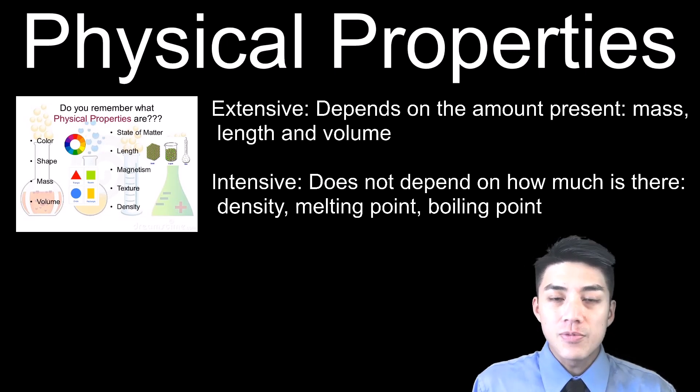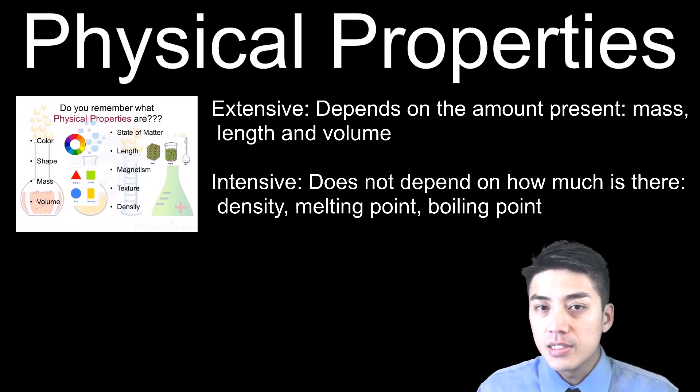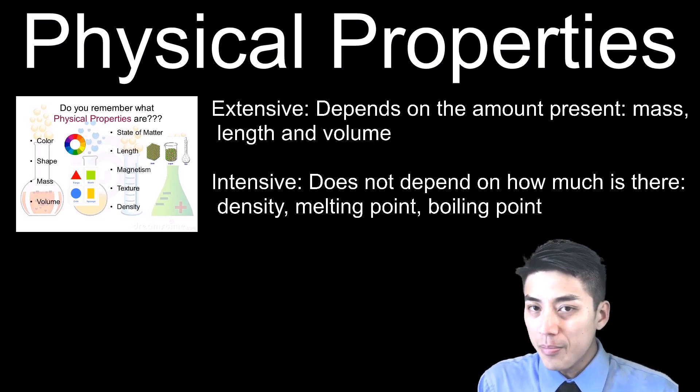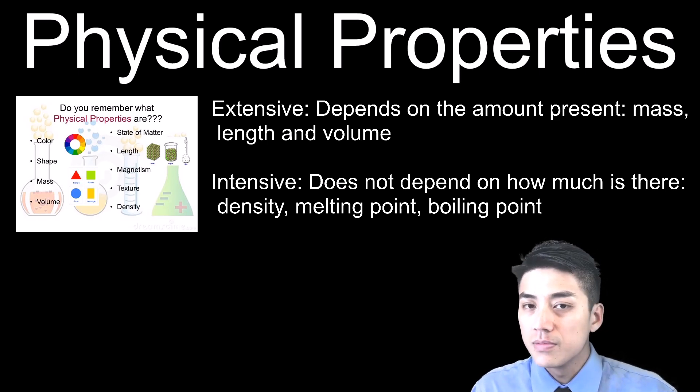Furthermore, physical properties can be divided into intensive and extensive properties. Extensive depends on the amount present. This is something that you would have to measure. For example, length, mass, volume. If you have a chunk of clay and you chop it up, it's all going to have different lengths and masses and volumes. Those are examples of extensive properties.